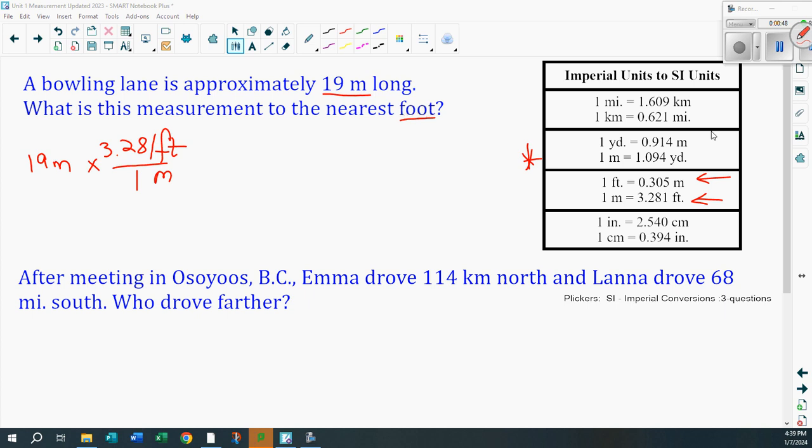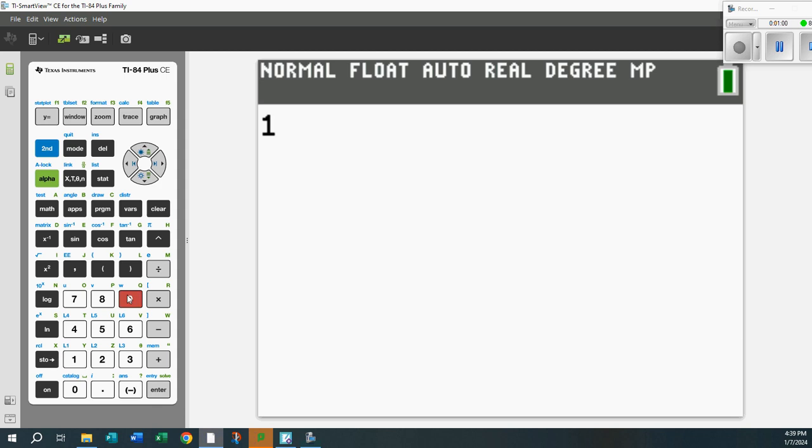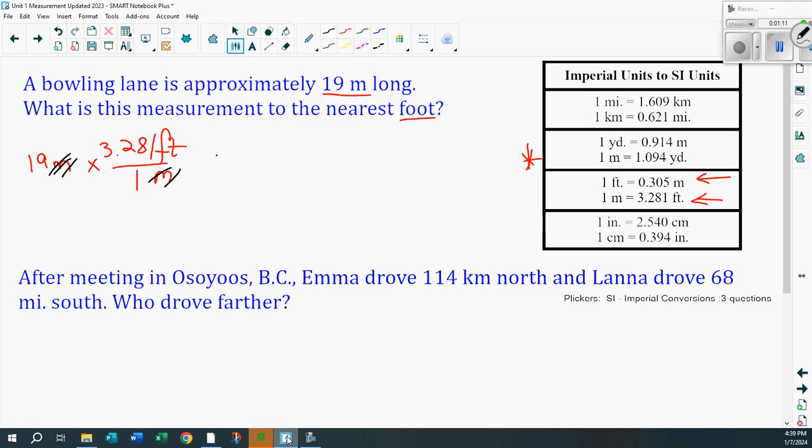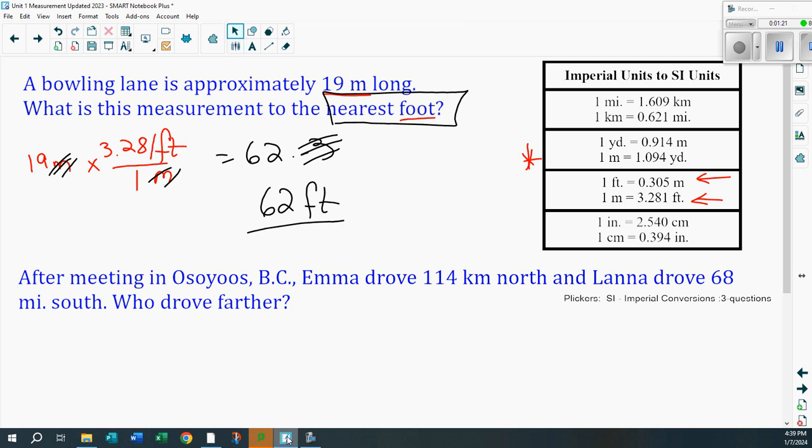3.281 feet makes up one meter. And look at this. Dimensional analysis tells us meters and meters cancel. I know this is going to be in feet. So I'm going to go 19 times 3.281. Gives me, look at that, 62.3. Now, it says to the nearest foot, so get rid of that. This is going to be 62 feet. Done. Super simple, isn't it?